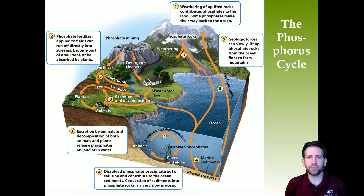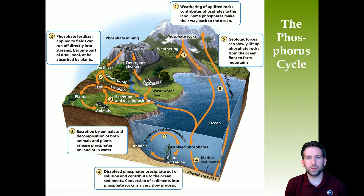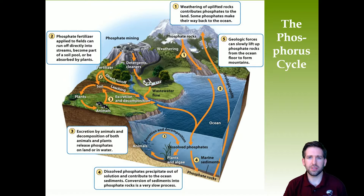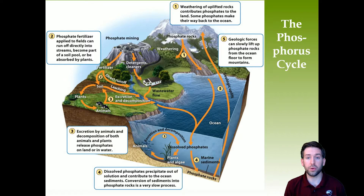Phosphorus, like nitrogen, is very important for plant growth and can also be a limiting factor. It is a huge part of DNA and ATP, so plants very much need it. Step one of the phosphorus cycle: weathering of uplifted rocks contributes phosphates to the land, and some phosphates make their way back to the ocean.